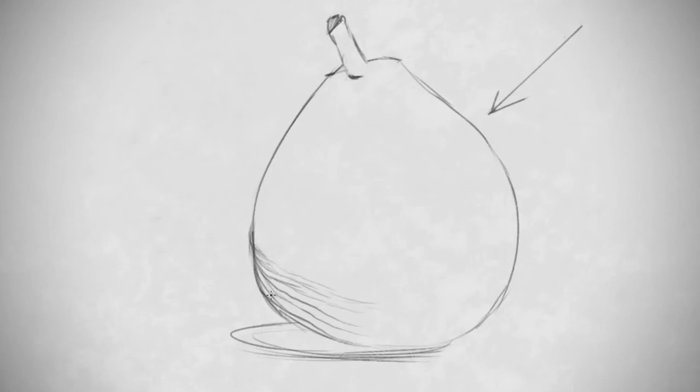So I'm accomplishing two things: I'm simultaneously showing shadow information as well as indicating the form of this pear. And then I could do the cross contour in the same way, still recognizing the shape of this pear but also making a bit of a grid.